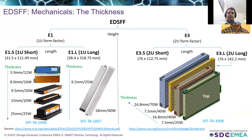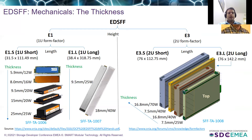Now let's look at the thermal profile, which determines the thickness of these devices. The EDSFF specification defines the thickness and thermal profile of each device, which determines the height of the heat sink, allowing mechanical and thermal engineers to determine the airflow conditions when designing the chassis. The E1.S defines five different device thicknesses, starting from 5.9 mm supporting 12 watts up to 25 mm supporting 25 watts. The E1.L has only two profiles: 9.5 mm at 25 watts and 18 mm supporting up to 40 watts.